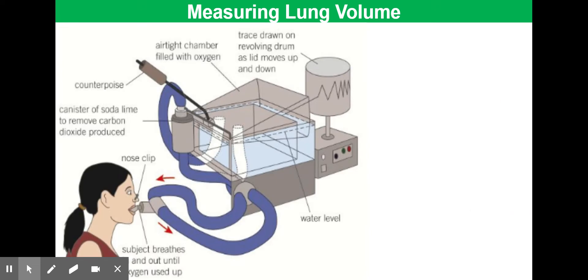So here we have a spirometer, this is a diagram of a spirometer on the slide in front of you. Lung volumes can be measured using such a piece of apparatus and the way that it does this is by measuring the movement of air in and out of the lungs as a person breathes in and out until the oxygen is used up.